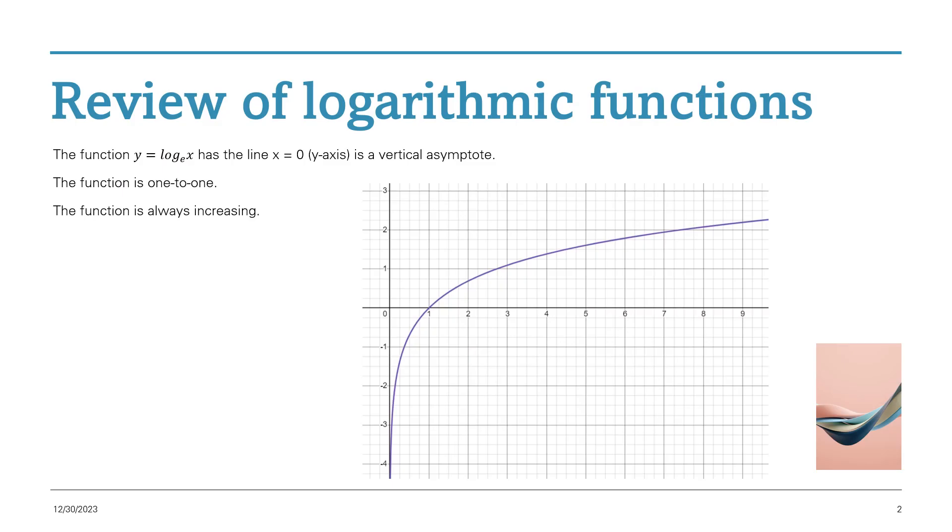So as a review, this is a graph of y equals log e to the x, or log of any base of x. It has the line x equals 0, or the y-axis, as a vertical asymptote. The function is one to one, and the function is always increasing.